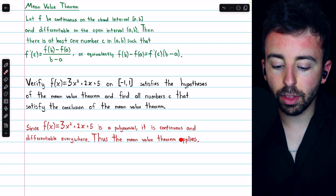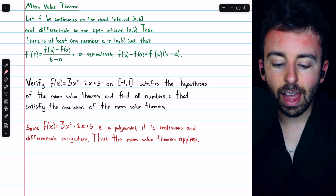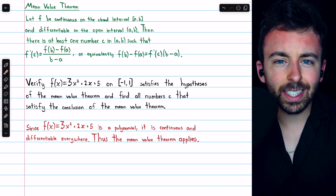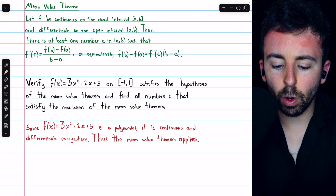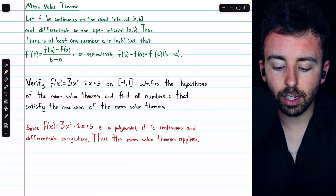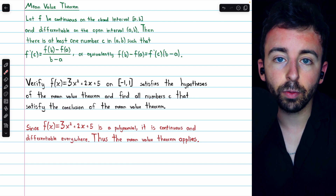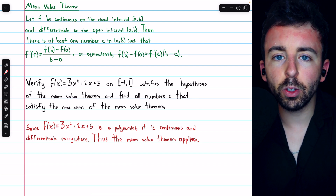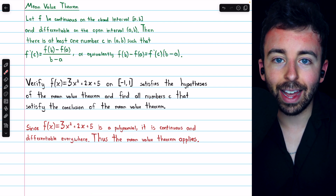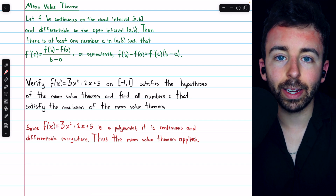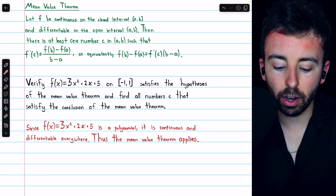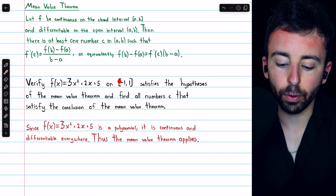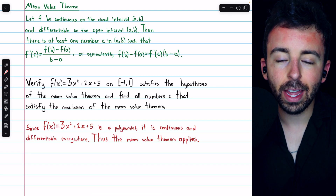So certainly the mean value theorem applies, and we are guaranteed at least one number c between negative one and positive one so that the value of the derivative at c is equal to the average rate of change of the function over this interval.